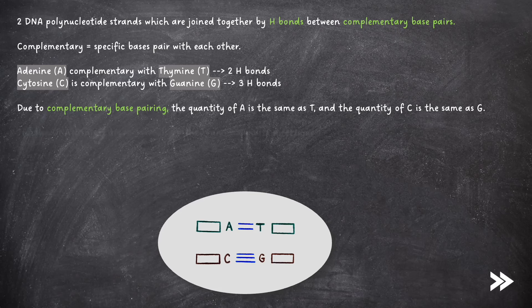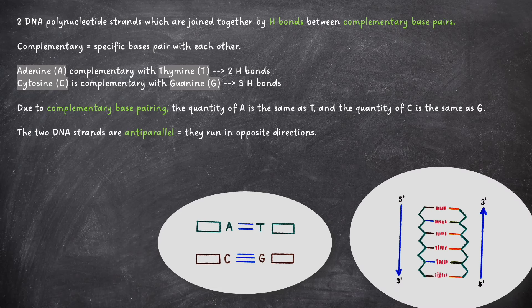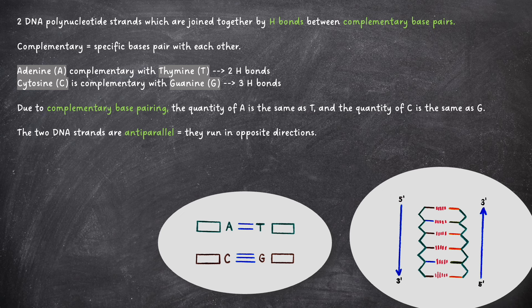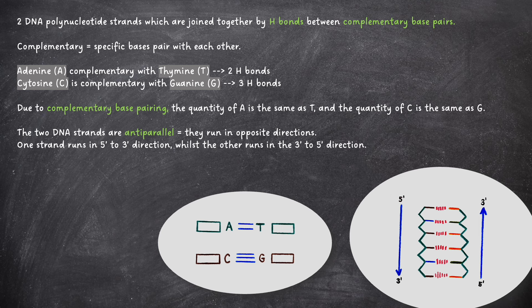The two DNA strands are antiparallel, which means that they run in opposite directions. One strand runs in the 5' to 3' direction, whilst the other runs in the 3' to 5' direction. The two antiparallel strands twist around each other to form a double helix.